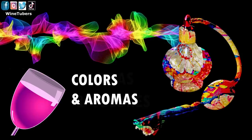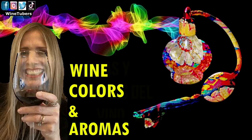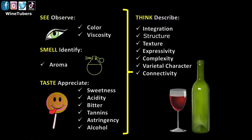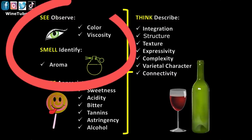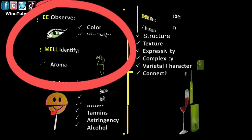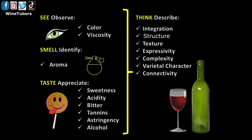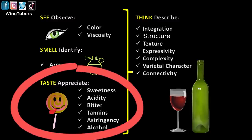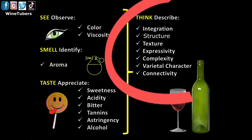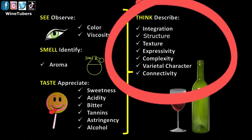Wine, through its colors and aromas, tells us a large part of its history. In the previous episode, we learned the basic concepts to understand them. We analyzed in detail the first two phases of the process of tasting and evaluating a wine. Today, we will complete the process of tasting wine and analyze our sensory impressions to describe, assess and judge the wine.